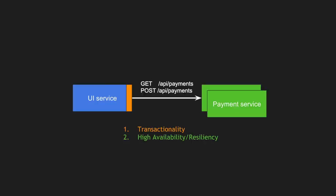For high availability in synchronous communication, you can scale the payment service to multiple instances within the same data center and across data centers. Note that this does not guarantee reliability — it only ensures availability, meaning the system is always present to serve requests but won't guarantee a successful response every time. A typical example is the IRCTC website during Tatkal booking — the website is always available, but payments can sometimes fail or sessions time out.